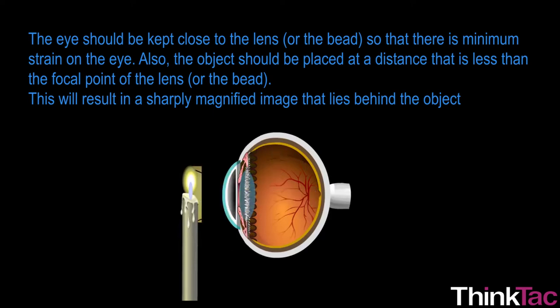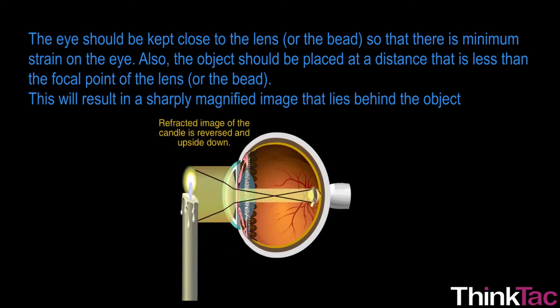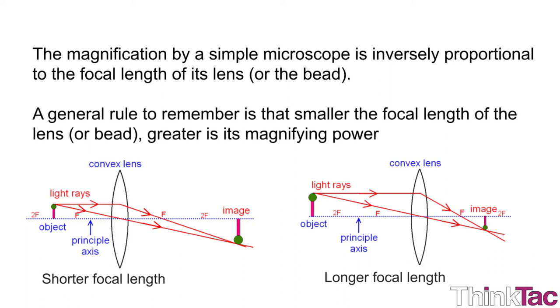The eye should be kept close to the bead so that there is minimum strain on the eye. Also, the object should be placed at a distance that is less than the focal point of the bead. This will result in a sharply magnified image that lies behind the object. The magnification by a simple microscope is inversely proportional to the focal length of its bead. This means that if a microscope is made with a lens or a bead of a higher focal length, its magnifying power will be less. A general rule to remember is that smaller the focal length of the lens, greater is its magnifying power.